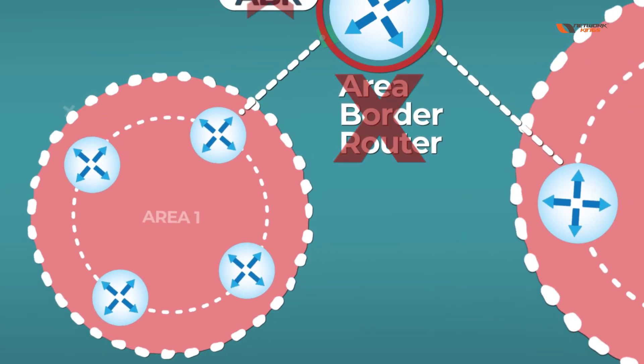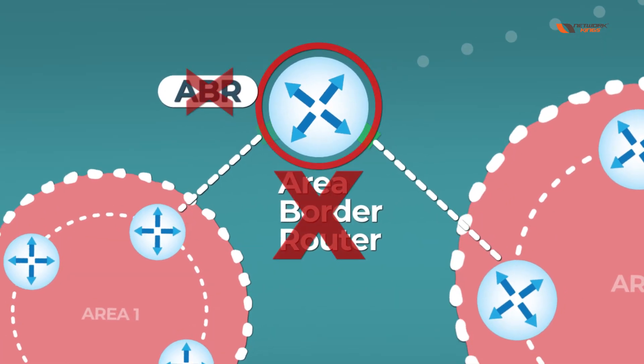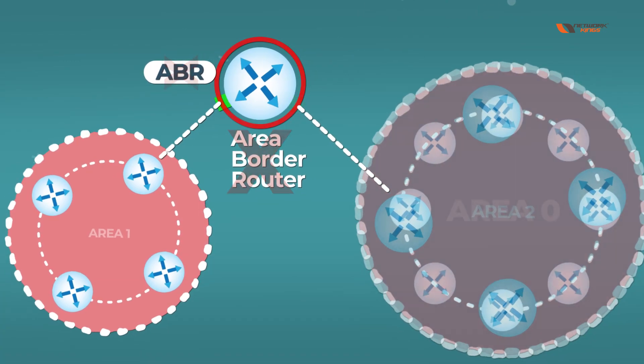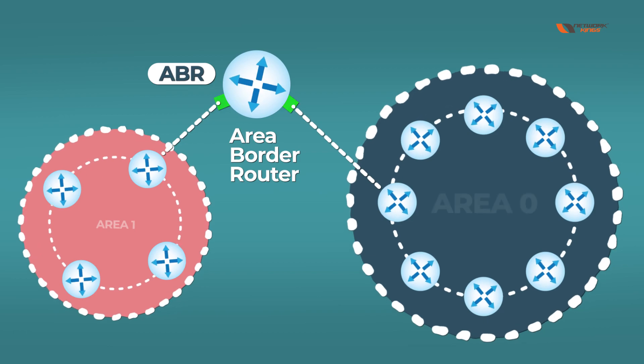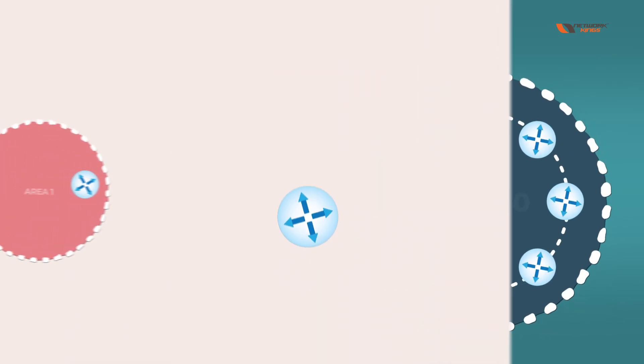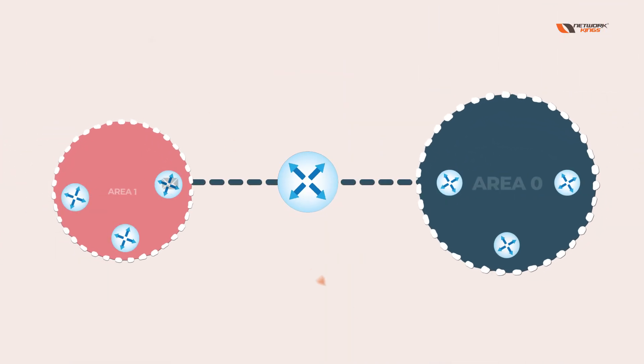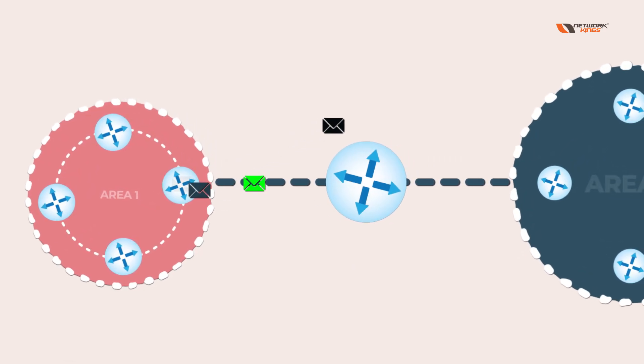According to OSPF design, when we have any interface in Area 0, our router becomes an ABR. When we have an ABR, then only we can share routes from one router to another area.